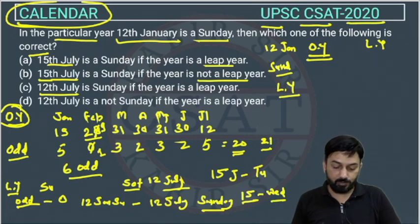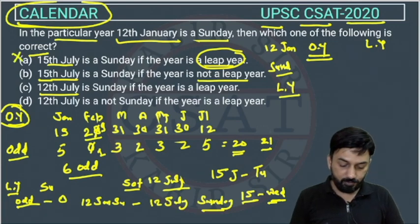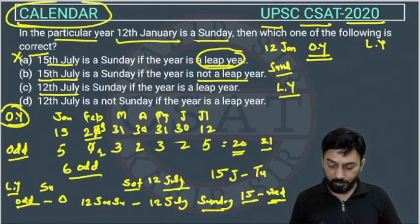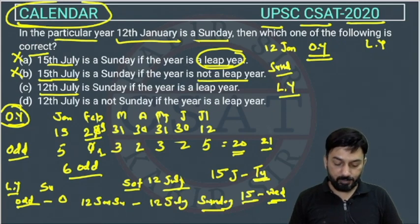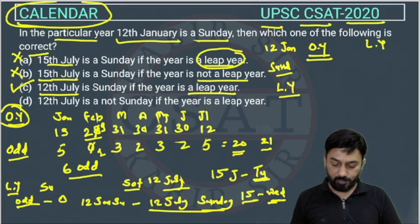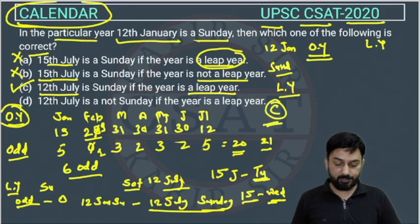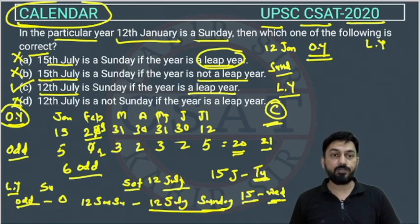Now we will check from the options. Option one — 15th July is a Sunday — this is wrong; in a leap year it is Wednesday, and in an ordinary year it is Tuesday. Option two — 15th July is Sunday if it is not a leap year — also wrong, since we got Tuesday. Option three — 12th July is a Sunday if the year is a leap year — this is correct! In a leap year, 12th July is indeed Sunday. Option four — 12th July is not Sunday if the year is a leap year — this is also wrong, because we are getting Sunday. So the answer is option C.